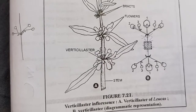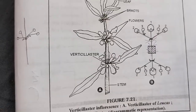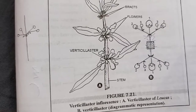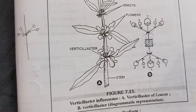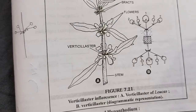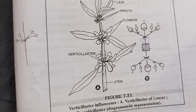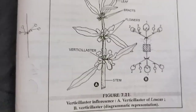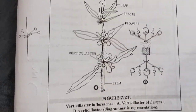So this is all about special types of inflorescence, in which we studied three types: hypanthodium, cyathium, and verticilaster. I hope you liked this video on inflorescence. If you like the video, please don't forget to like, subscribe, share, and comment.